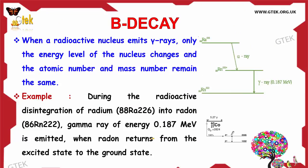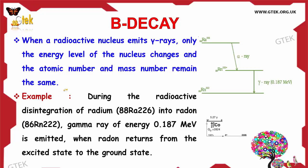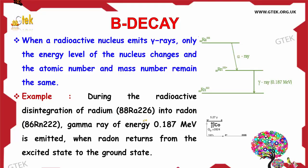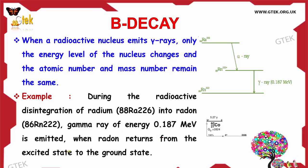When a radioactive nucleus emits gamma rays, only the energy level of the nucleus changes; the atomic number and mass number remain the same. For example, during the radioactive disintegration of Radium Ra-226 into Radon Rn-222, gamma rays of energy 0.187 MeV are emitted when radon returns from the excited state to the ground state.